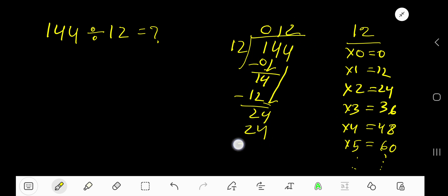2 times 12 is 24. Subtract to get 0. So our answer is 012, which means 12 is our answer, or quotient.